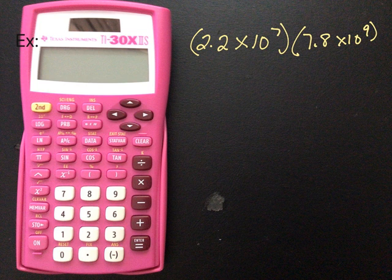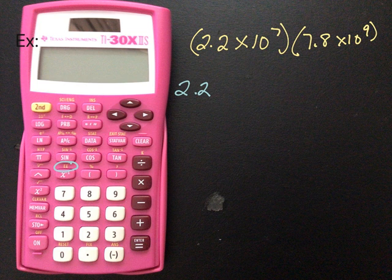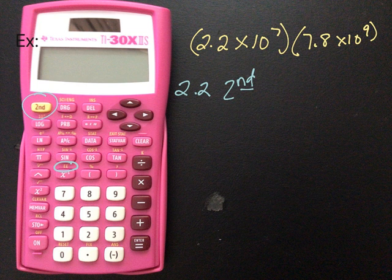All right, so we are looking here at this one, and we are multiplying 2.2 times 10 to the 7th times 7.8 times 10 to the 9th. Now, what I want to show you is that the EE button is right here. So it's yellow.